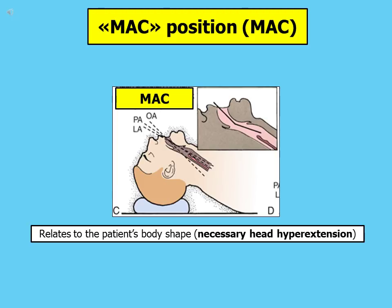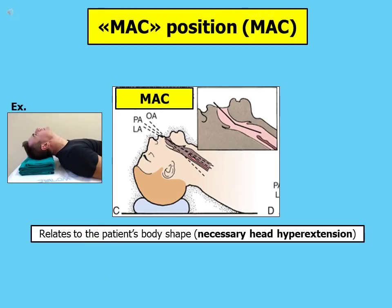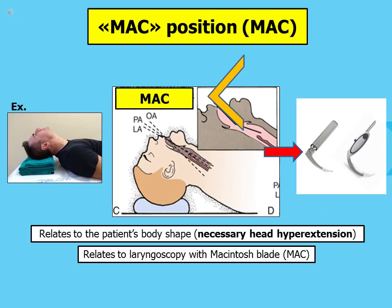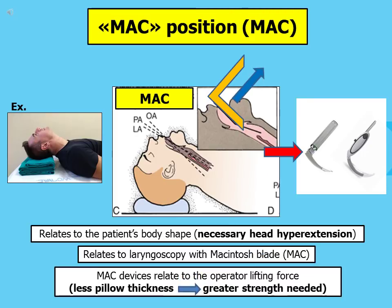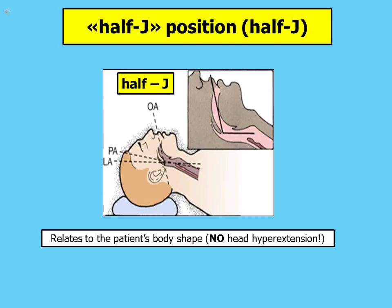In J position, there is no parallelism between the three anatomical axes: zero out of three. MAC position relates to the patient's body shape, so you should reduce the thickness of the pillow because it will be necessary to obtain head hyperextension. MAC position relates to MAC devices — every laryngoscope which works with the Macintosh blade, both for direct or video laryngoscopy. MAC devices relate to your lifting force.